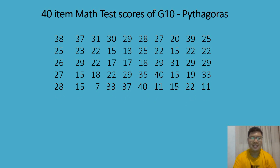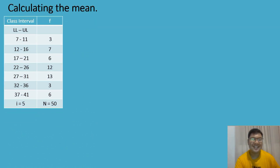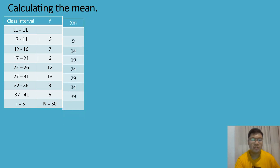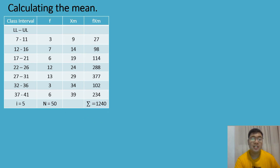So let us now calculate the mean. To solve for the mean of the grouped data, we need to fill up our frequency distribution table with the following data: the class interval together with its class width, which is equal to 5, the frequency, the total number of frequency which is equal to 50, the class midpoint, and then the frequency times the midpoint, and also its summation, which is equal to 1,240.